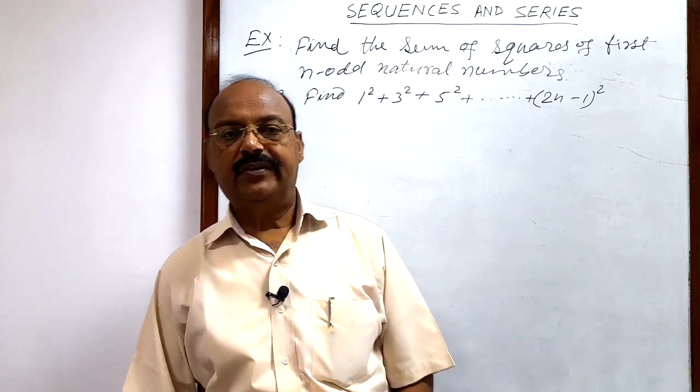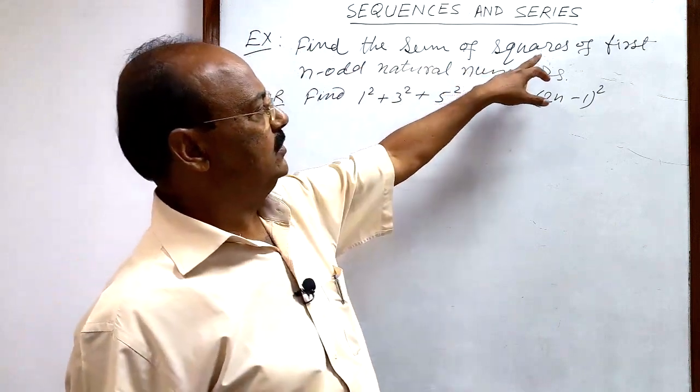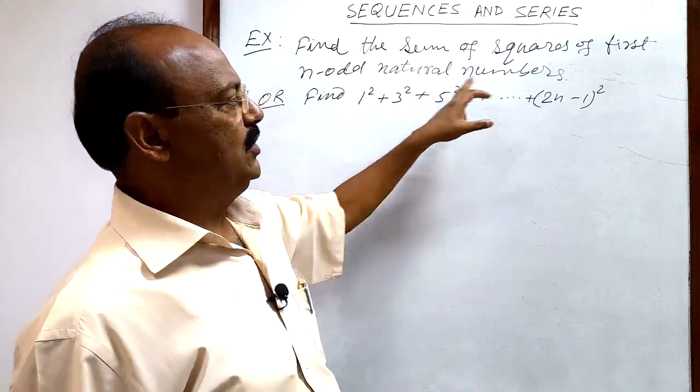Here, let us see a question from the topic sequence and series. Question is, find the sum of squares of first n odd natural numbers.